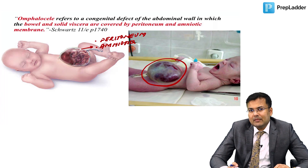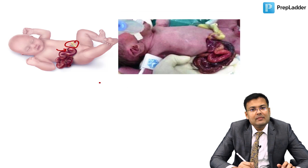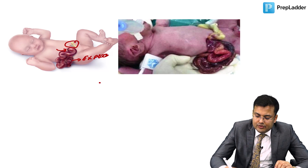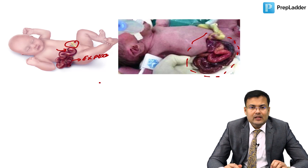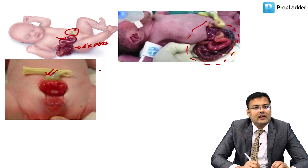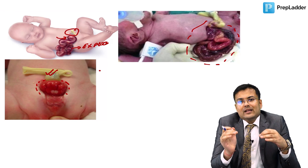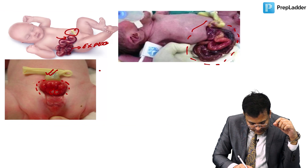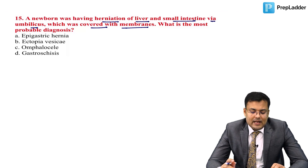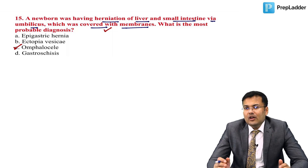In gastroschisis, the umbilical cord is visible with splitting on the right side and herniated bowel that is exposed and uncovered. In ectopia vesica, the infra-umbilical abdominal wall is missing, the anterior wall of the bladder is absent, and the exposed trigone is visible. The correct answer for herniation covered with membranes is omphalocele (exomphalos).